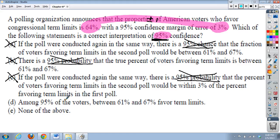D. Among 95% of the voters, between 61% and 67% favor term limits. Now, this one doesn't talk about probability, so you might consider it, but this really isn't, again, a good interpretation of the 95%. It's not that 95% of our voters fall in our one kind of unique confidence interval, that is wrong as well, which leads us to the correct answer that none of these are the correct way.